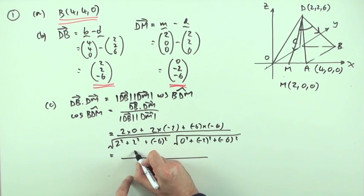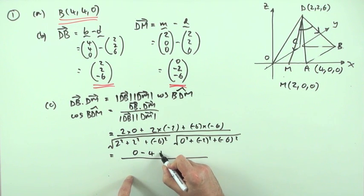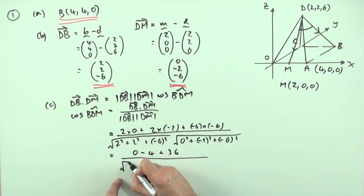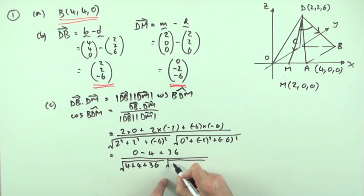So the top part is simply going to be nothing, take away 4, plus 36. That's going to be the square root of 4, plus 4, plus 36. And the square root of 0, plus 4, plus 36. So it means the cosine is going to come to altogether 32 upon root 44, root 40.